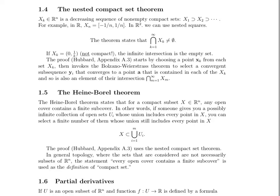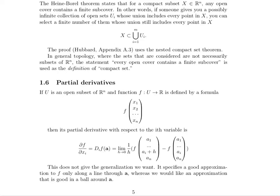Let's continue on with derivatives in Rn. If u is an open subset of Rn and the function f maps from u to R, defined by a formula where each element has inputs x1, x2, x3, x4 in the domain with output in R, then its partial derivative with respect to the i-th variable is just like the limit definition of the derivative. We take one over h as h goes to zero and multiply it by the difference in function values, putting the increment h only on the particular component that we care about.